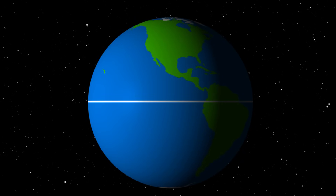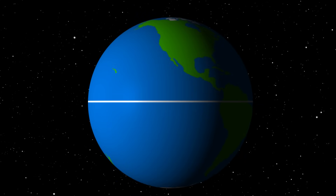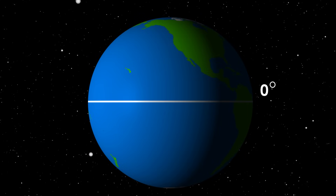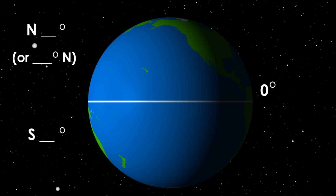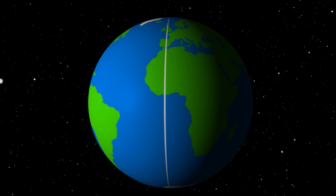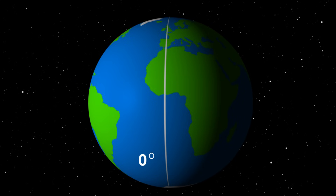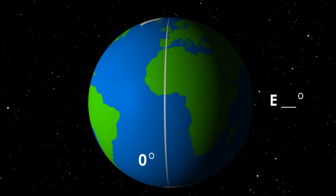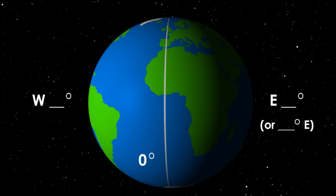The equator is the line of latitude that divides the Earth into the northern and southern hemispheres. At zero degrees latitude, all locations north of the equator are written as N number of degrees, and all locations south of the equator are written as S number of degrees. Lines of longitude begin at the prime meridian, which divides the Earth into eastern and western hemispheres. At zero degrees longitude, all locations east of the prime meridian are written as E number of degrees, and all locations west of the prime meridian are written as W number of degrees.